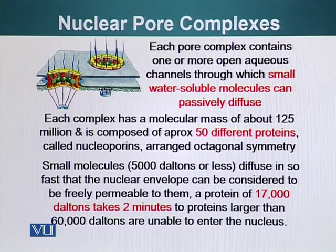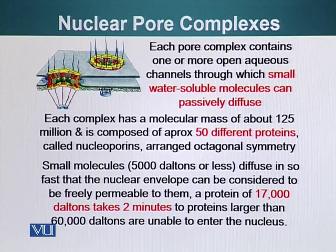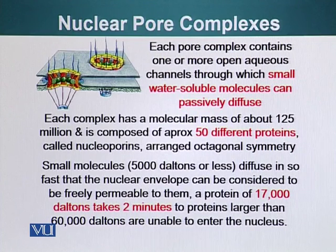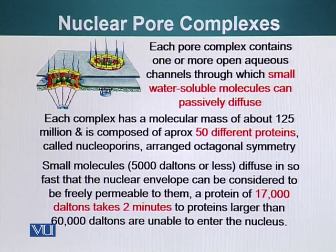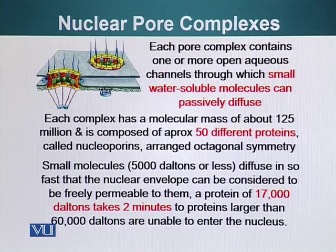Small molecules of 5,000 daltons or less diffuse into the nucleus so fast that the nuclear envelope is considered freely permeable to them. For example, an injected dye containing small molecules less than 5,000 daltons immediately enters the nucleus under the microscope. However, proteins of about 17,000 daltons take about two minutes, and larger proteins of about 60,000 daltons are pretty much unable to enter the nucleus passively.